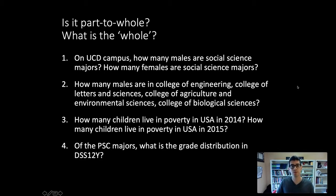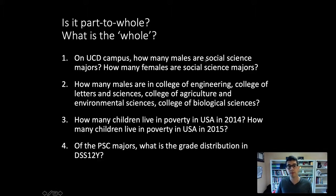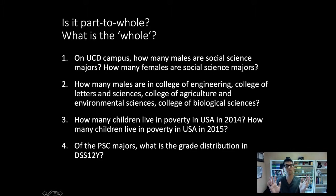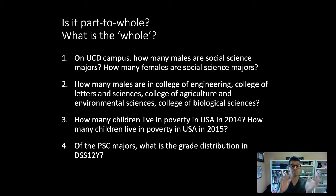Let's talk through a few examples to think through this part-to-whole relationship. The first example: on the UC Davis campus, how many males are social science majors and how many females are social science majors? Is this a part-to-whole relationship? Yes. The whole is social science majors, and the parts would be males and females. We could represent this with a pie chart where the whole pie is social science majors and the slices are male and female students.